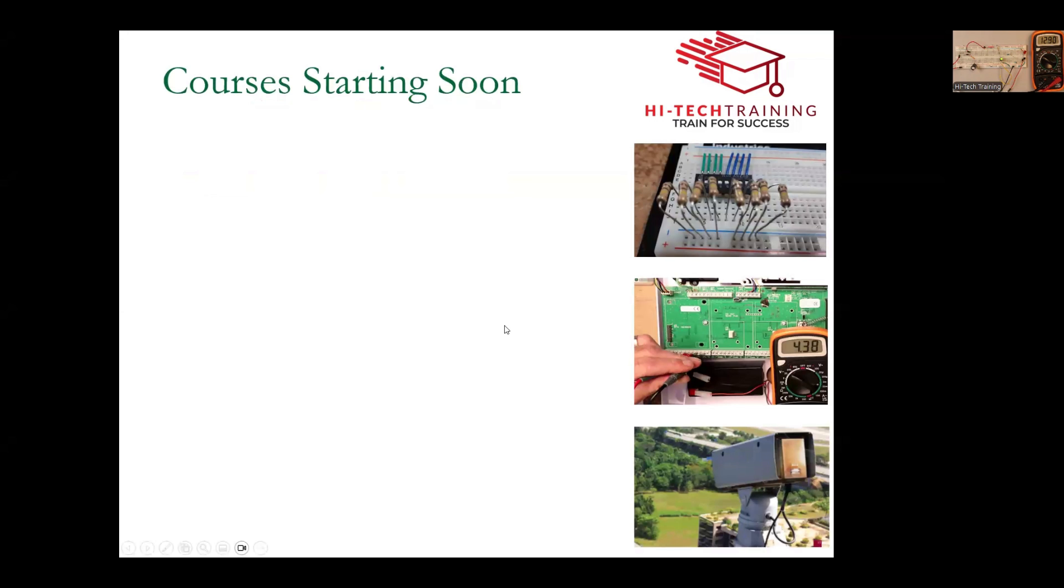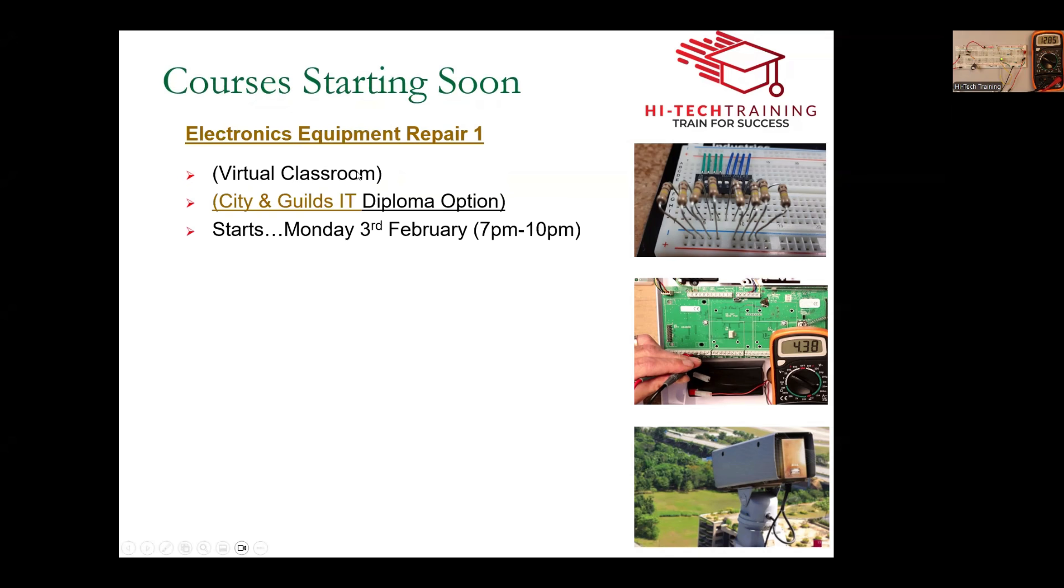So upcoming courses. This picture here is for electronics. We have electronics starting off on Monday, the 3rd of February through the virtual classroom, online virtual classroom. And you can get a City and Guilds certificate from that course on completing various practical assignments and multiple choice questions. You can get a diploma if you get several of the City and Guilds courses done.